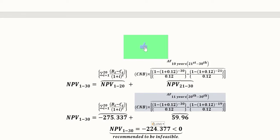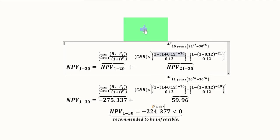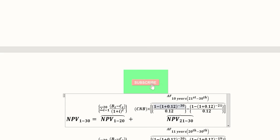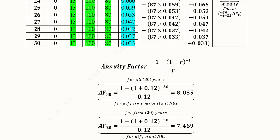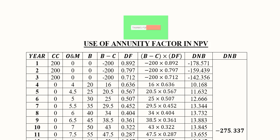We add these two values and get the final NPV, which is approximately negative — meaning the project is not recommendable. This is how we can find the NPV using the annuity factor method, which is quite convenient in terms of calculations and is based on simple arithmetic. This is an example of the annuity factor and its application in NPV analysis.